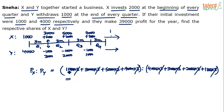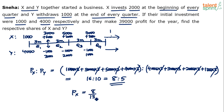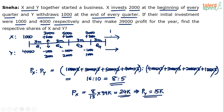Simple calculation: 1+3+5+7 = 16, and 4+3+2+1 = 10. So the ratio is 16:10, which simplifies to 8:5. Profit of X = 8/13 × 39,000 = 24,000. Profit of Y = 39,000 − 24,000 = 15,000. So the individual shares are 24,000 and 15,000 respectively.